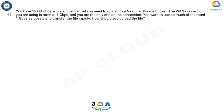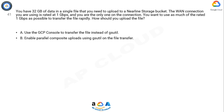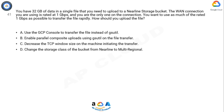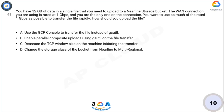Option A: Use the GCP console to transfer the file instead of gsutil. Option B: Enable parallel composite uploads using gsutil on the file transfer. Option C: Decrease the TCP window size on the machine initiating the transfer. Option D: Change the storage class of the bucket from near-line to multi-regional. Now think for 10 seconds for the answer.